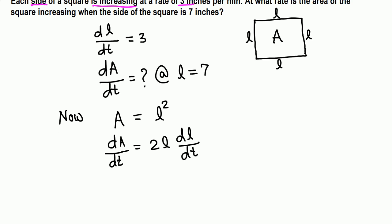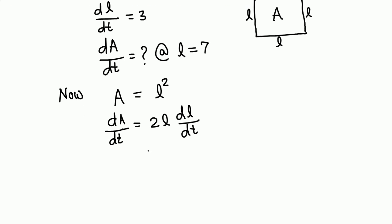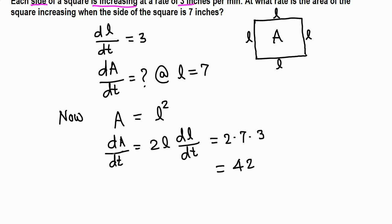Now we plug in the given numbers and find the unknown. dA over dt is what we are looking for, so that equals 2 times L. L is at the moment when L is 7, and dL over dt is 3, so multiply 14 times 3, 42.